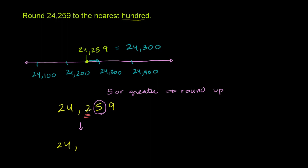And since we're rounding up, we make the two into a three. We increment it by one. So rounding up, it's 24,300. That's what we mean by rounding up.